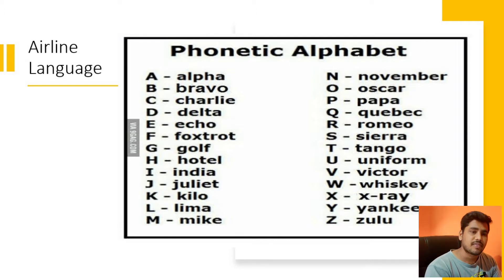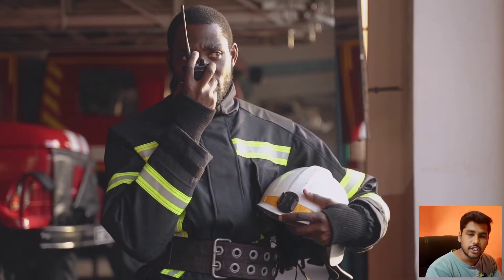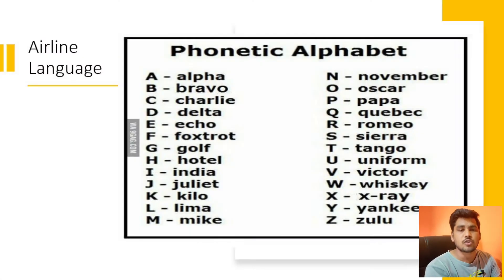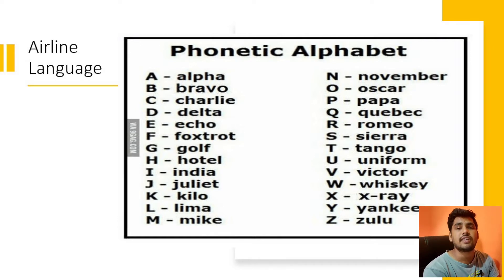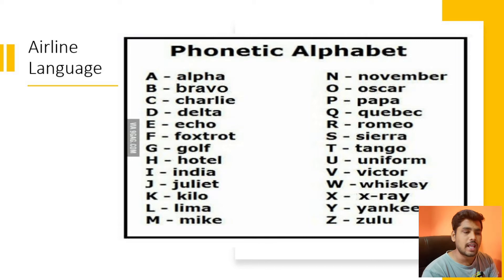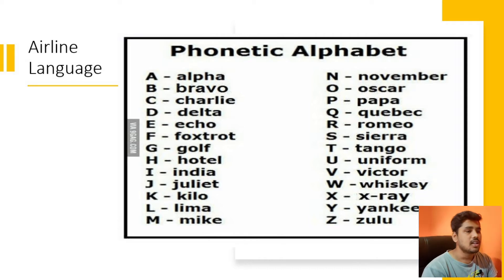One more example: suppose we are speaking on walkie-talkie — we also use walkie-talkies in airports. While speaking on walkie-talkie, there is a chance the other person mistakes 'B' for 'V'. These kinds of miscommunications can happen, and because of them there can be a chance of incidents or safety lapses. To prevent this, ICAO recommended these phonetic alphabets.